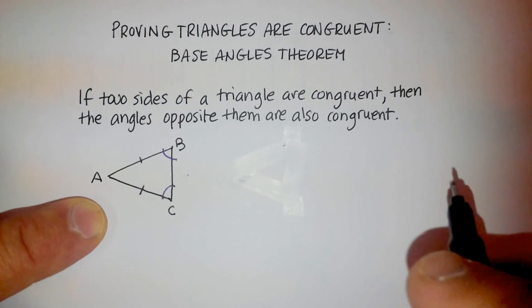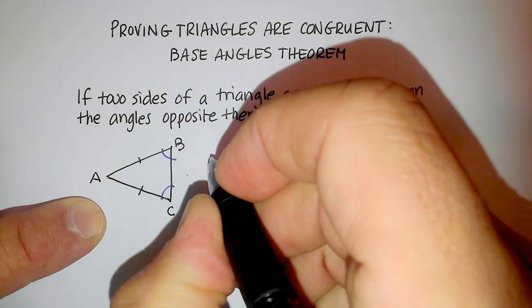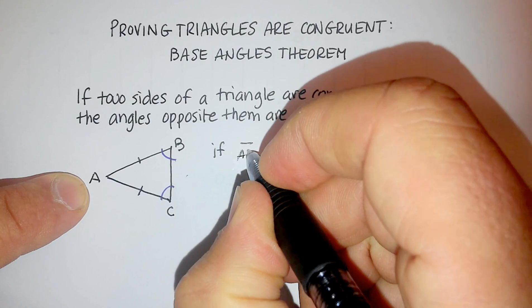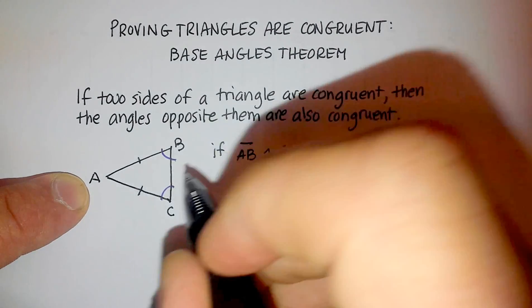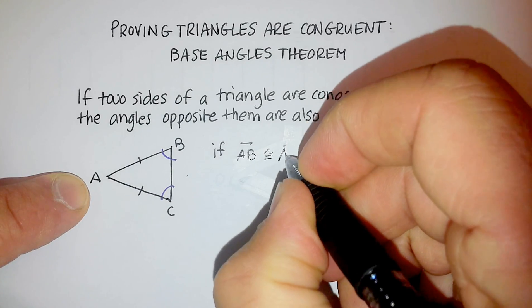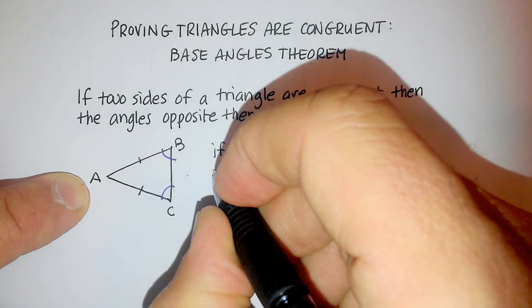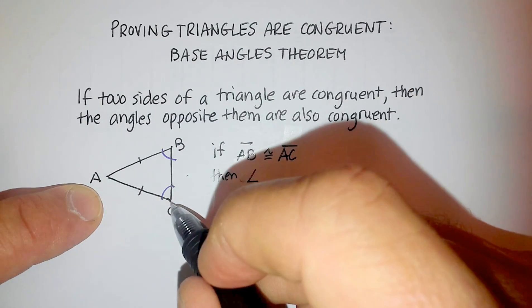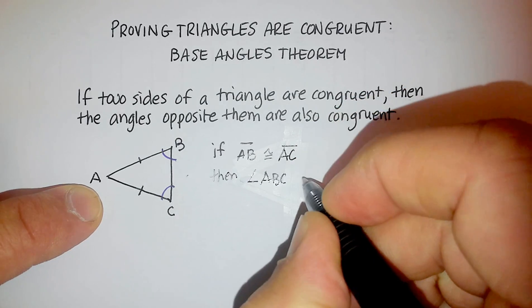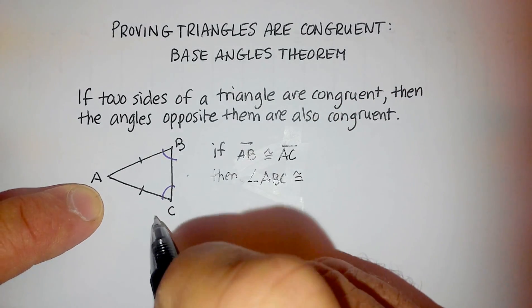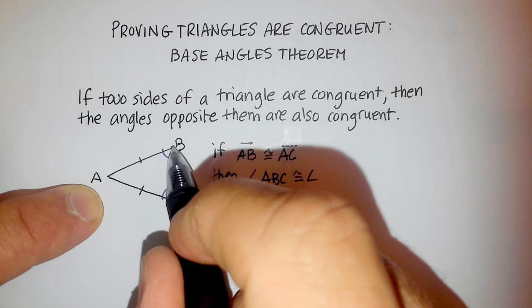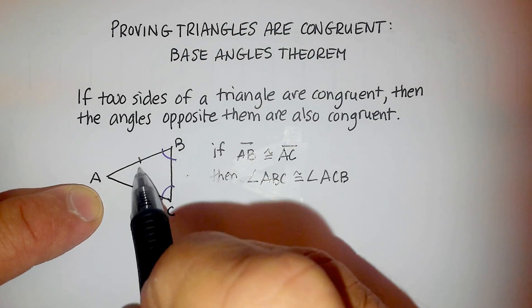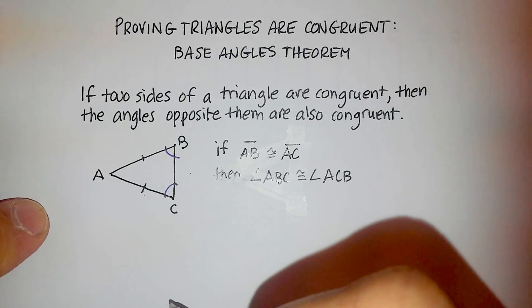So I can write it out this way. If line segment AB is congruent to line segment AC, then angle ABC will be congruent to angle ACB. So again, if I have two sides that are congruent, then the angles opposite them are also congruent.